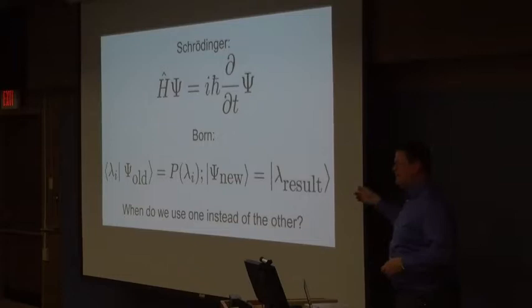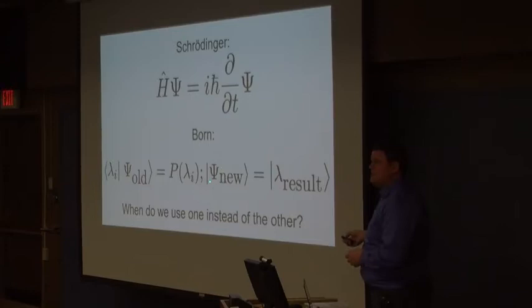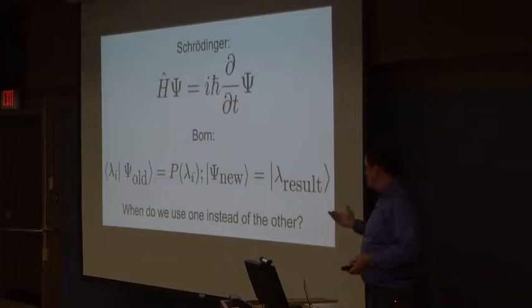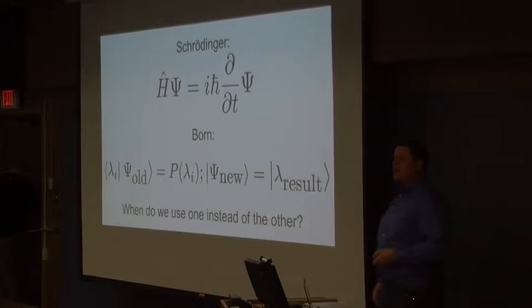And, you know, those quantum states evolve smoothly. They don't jump around. There's just, you know, smooth undulation from one state to another. This is why we call this a wave equation, right? Waves wave. But then there's the Born rule, right? That's the lower equation. And that's different. It says that when we look at quantum states, they jump. They pick an eigenstate of the basis that we're measuring them in. And as you may have noticed, these two equations, they're not the same. Which leads us to the question, when do we use one of these instead of the other?